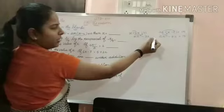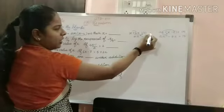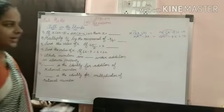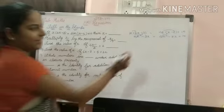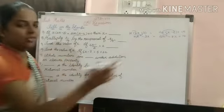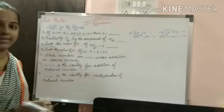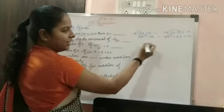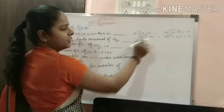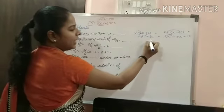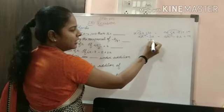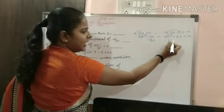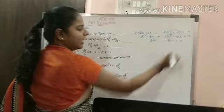Both sides are equal, so the 2x squared terms on both sides will be cancelled. If you transpose one to the other side it becomes minus, so you can directly cancel identical terms. After cancelling, we have: minus 3x is equal to minus 8x plus 10.